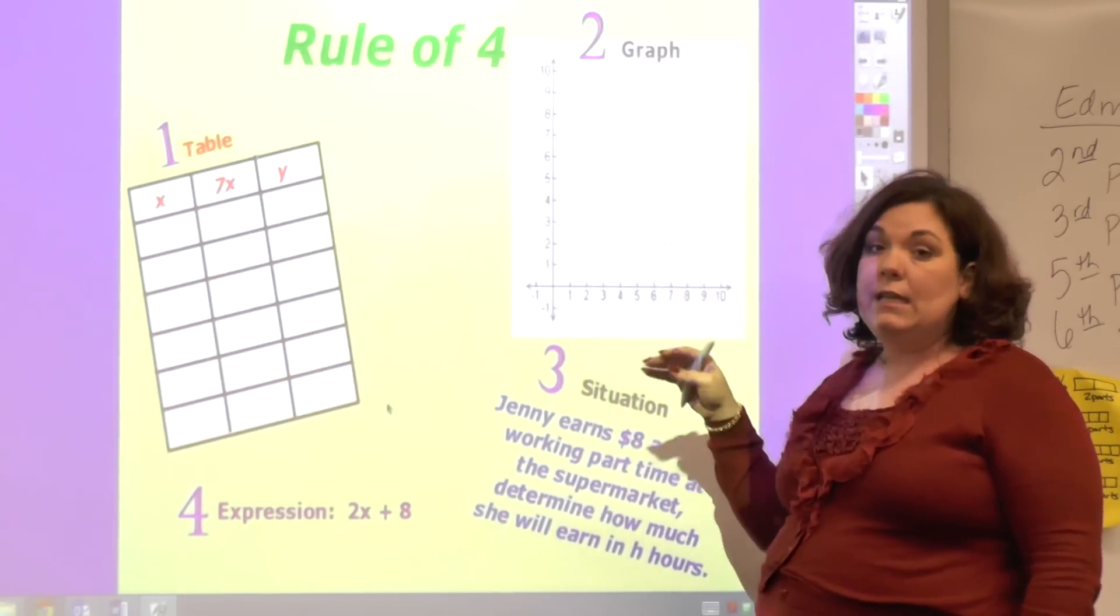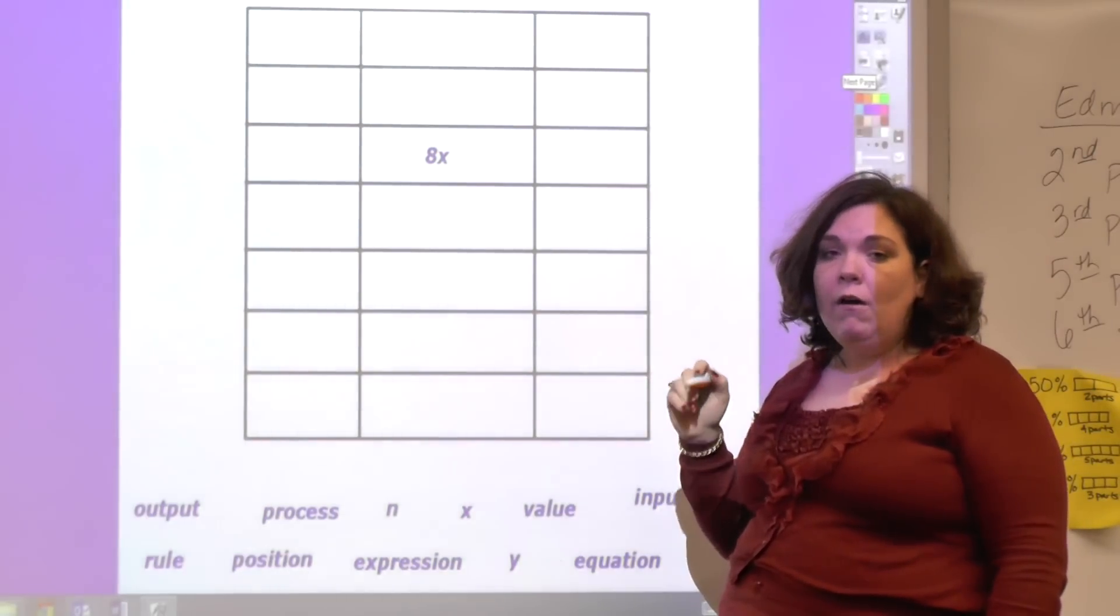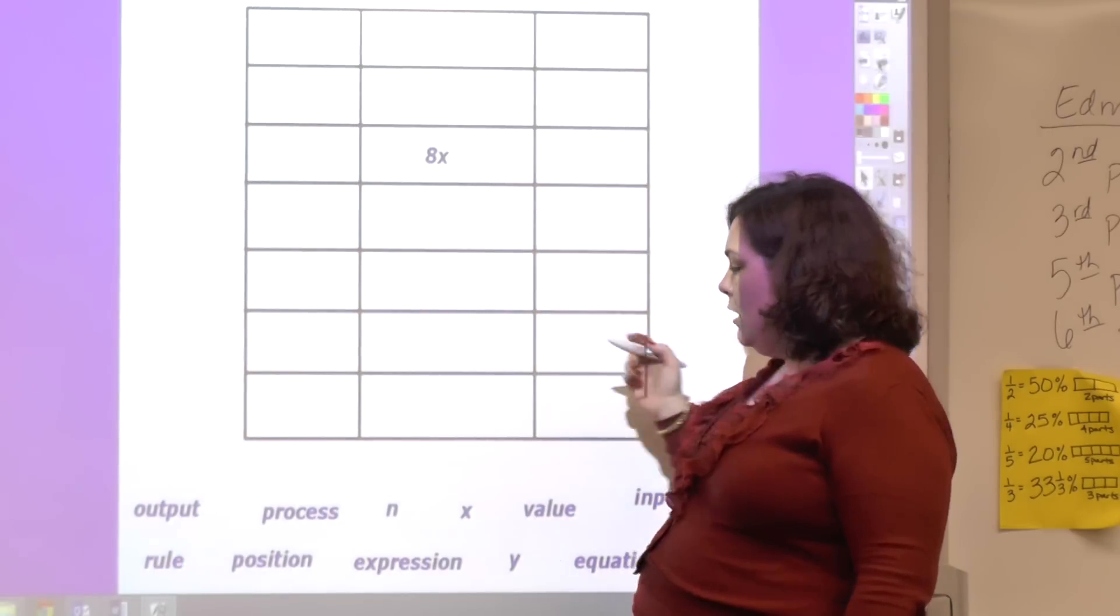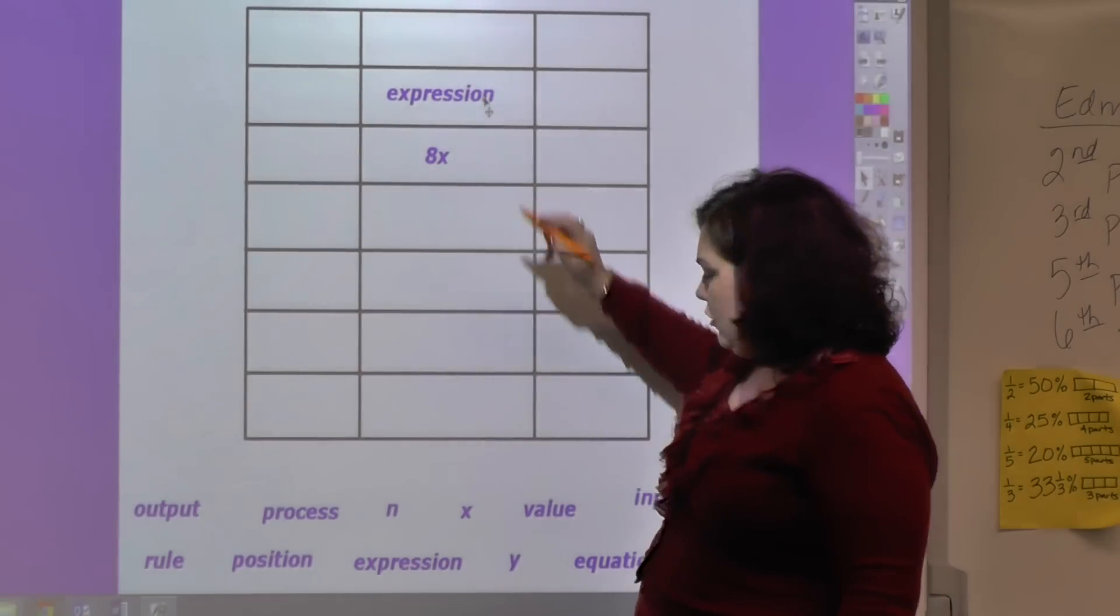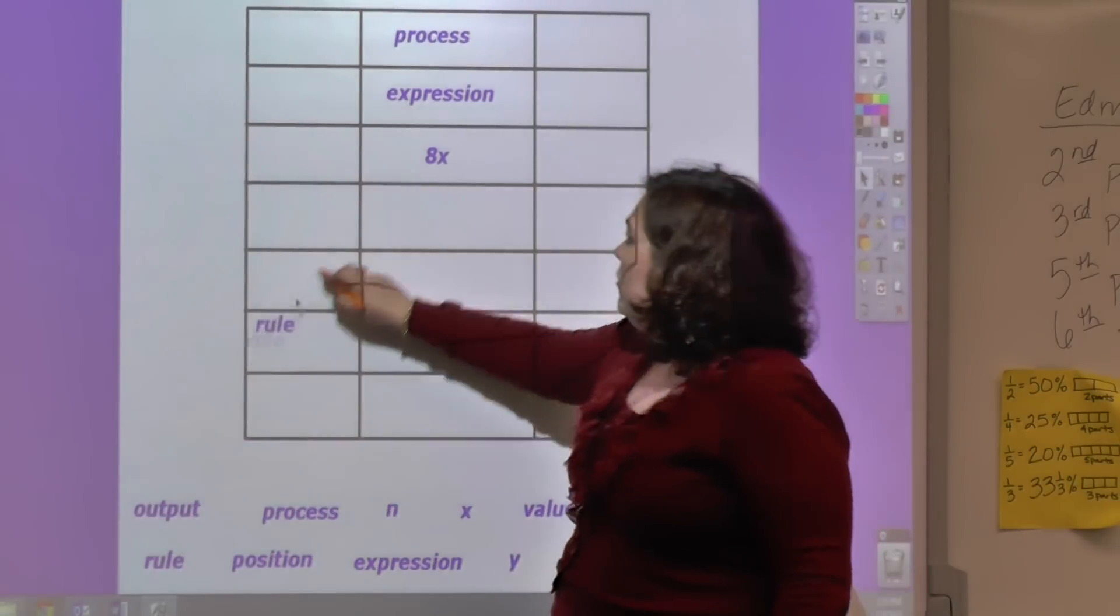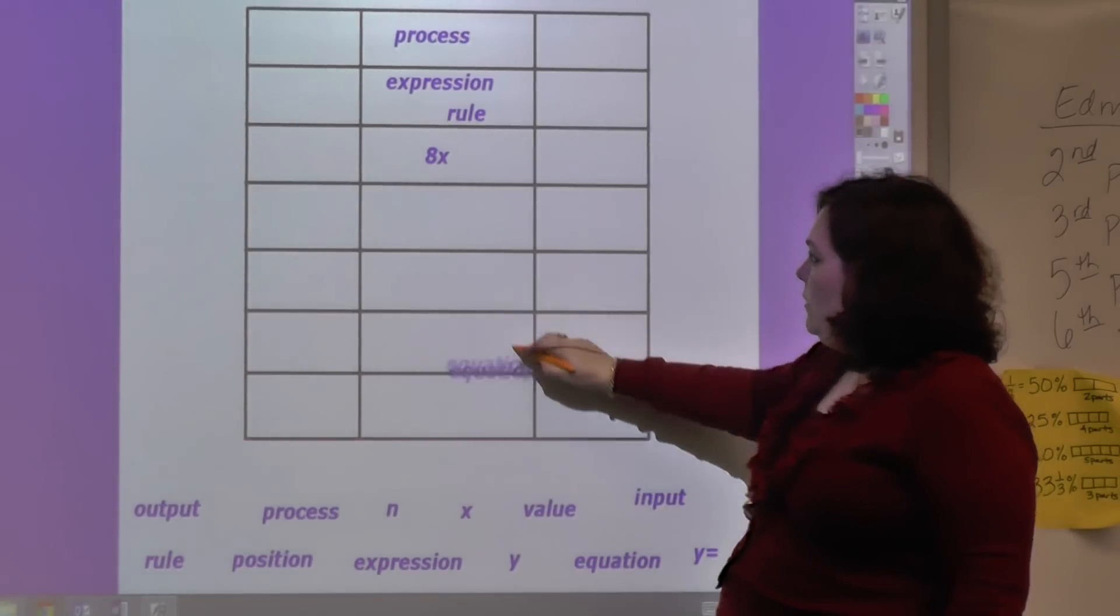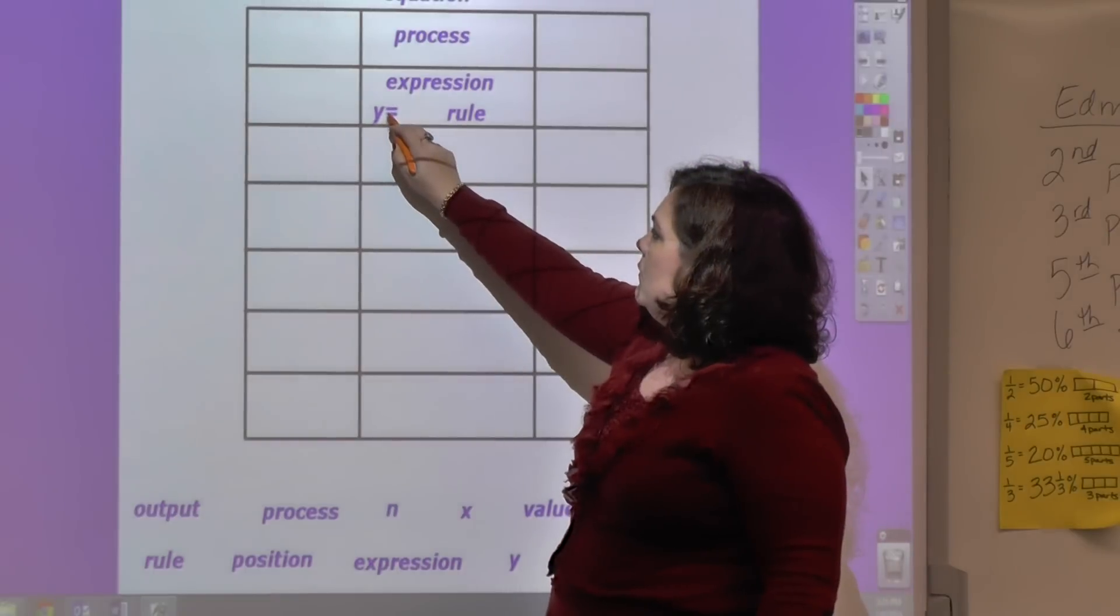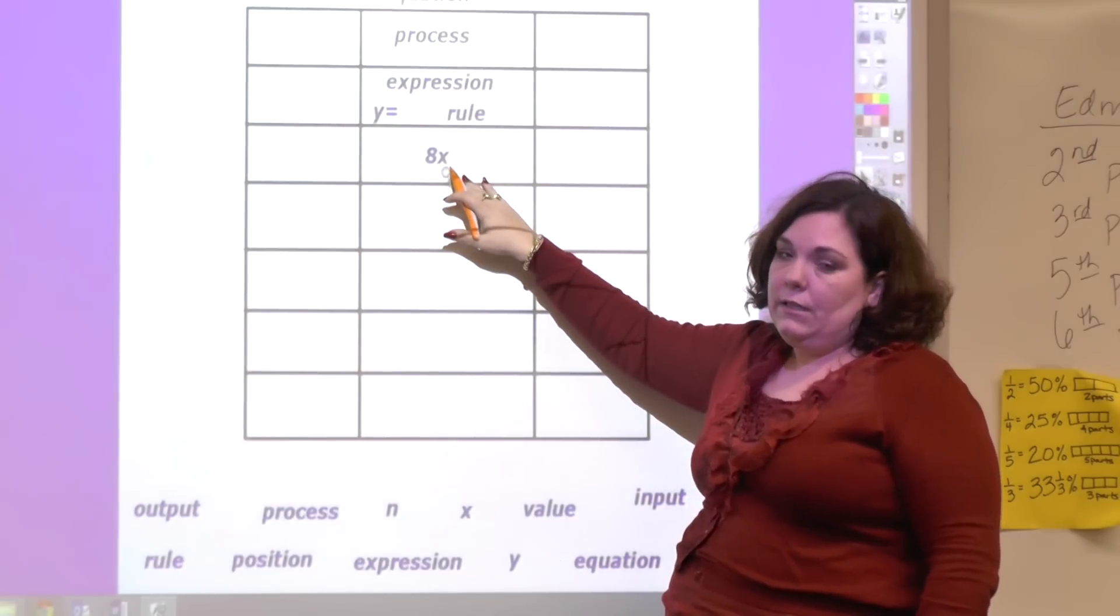Probably the most confusing thing about the rule of four is just all the different terms that are for the same thing. If you have a rule, 8x, let's label what these things are also called. It's also an expression, it's also called a process, and of course I've already referred to it as a rule. So those are all words that could be used, and it even includes equation and the Y equals.